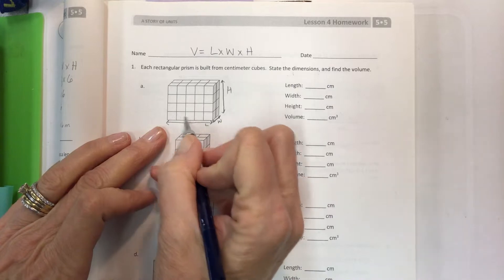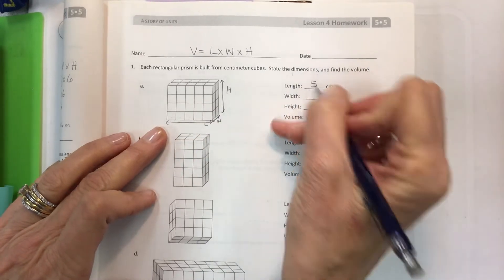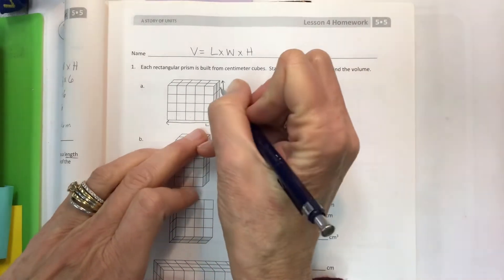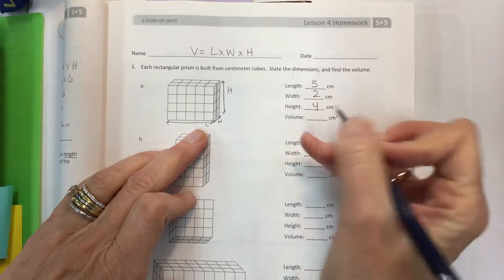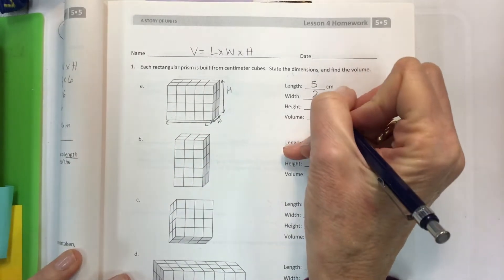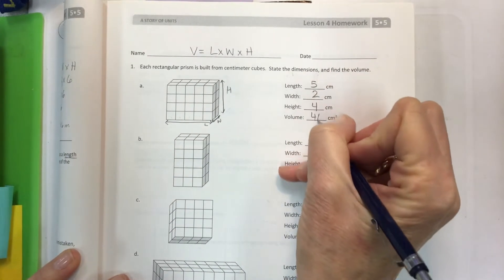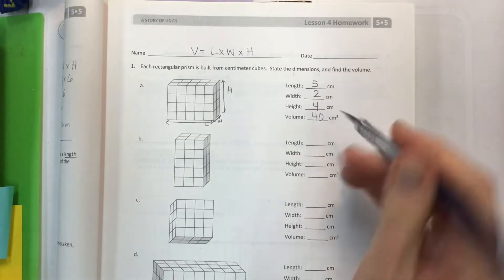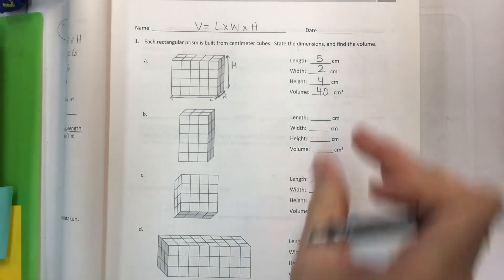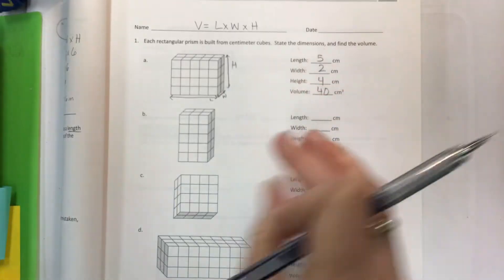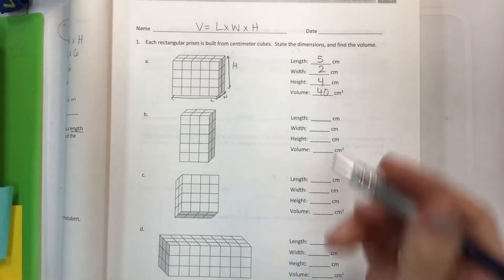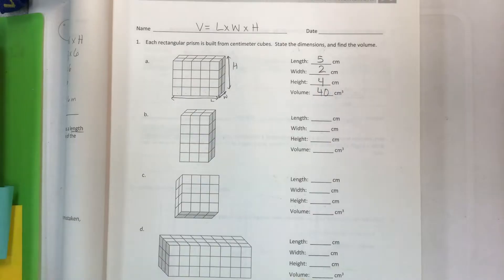So if we have our length 1 2 3 4 5, width is 2, height is 1 2 3 4, then the volume 5 times 2 is 10, 10 times 4 is 40. So you can pretty much blaze through these very quickly. If you didn't know what you were doing then pause the video, complete these and turn the video back on and check and see how you did.